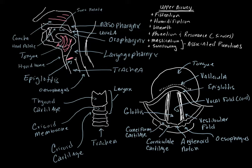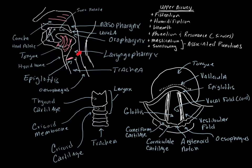You also have what's known as your pharynx — that's the posterior or dorsal aspect of your throat. You have three sections: the nasal pharynx, directly behind your nasal cavity; the oral pharynx, directly behind the oral cavity; and the laryngeal pharynx, which is inferior.